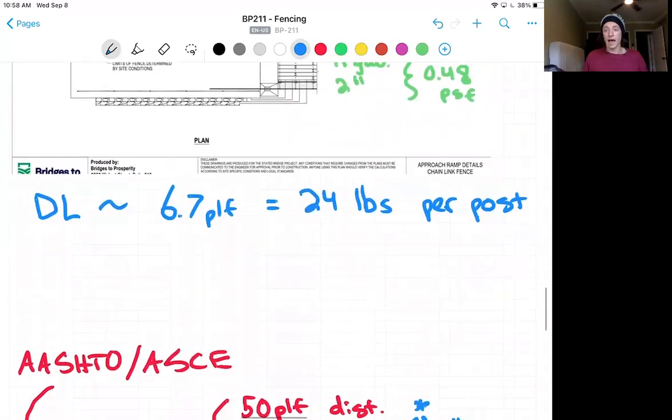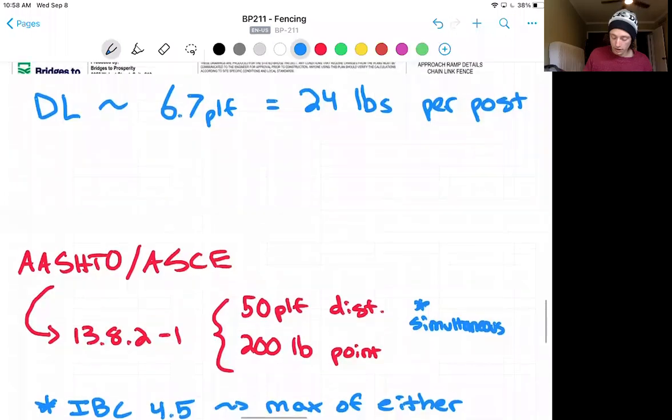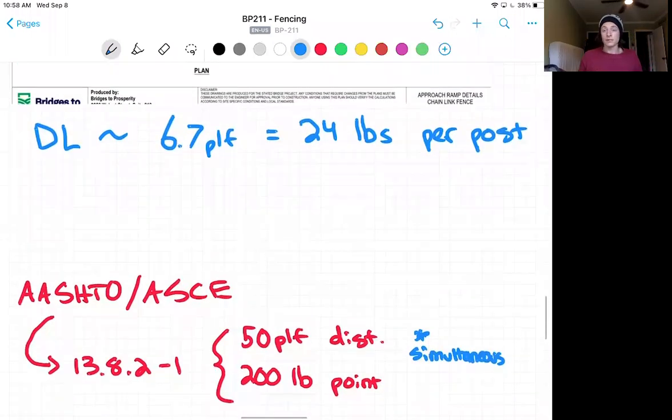Now, we can refer to AASHTO or AACE for our live loading. And both of these governing bodies give a distributed and a point load. And these are the same. And in AASHTO, you can find it in section 13.8.2-1. And we have a 50 pounds per linear foot distributed load and a 200 pound point load. These are requested to be acting simultaneously.